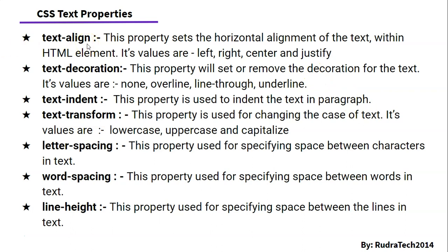First is text-align. This property will help us to align the text to the left, right, center, and justify. Then is text-decoration. This will allow us to add a line above the text, between the text, and below the text — that is the underline. You can put the text as strikethrough or underlined text, which will emphasize its importance. Then we can give indentation to a paragraph using the text-indent property.